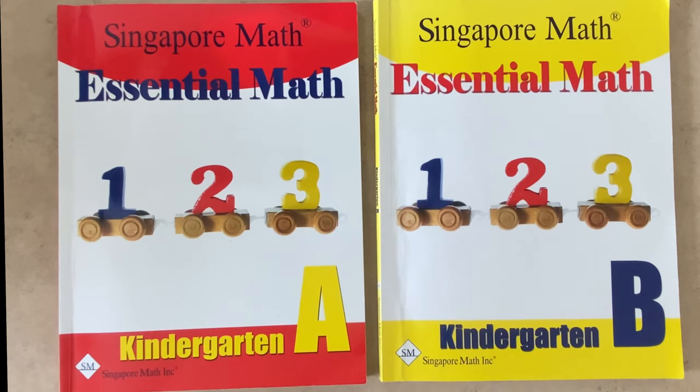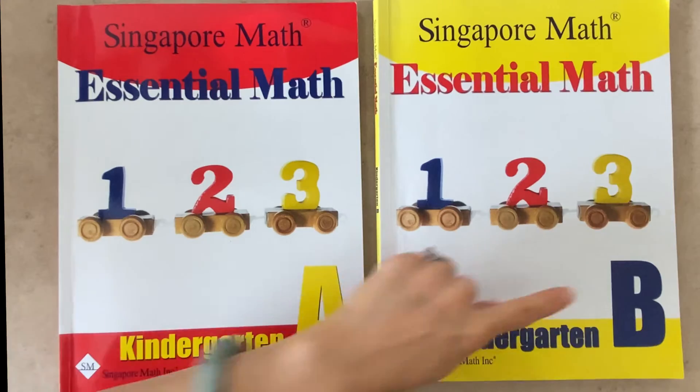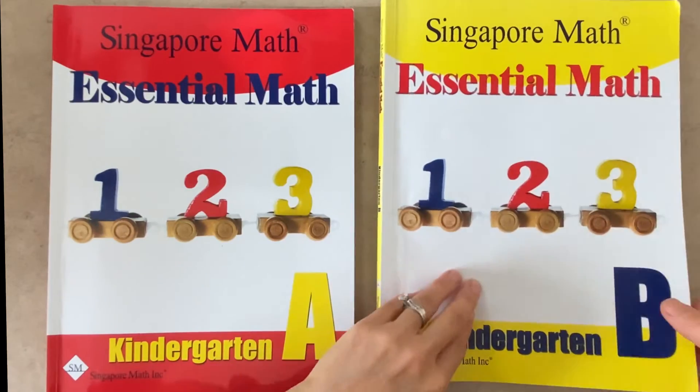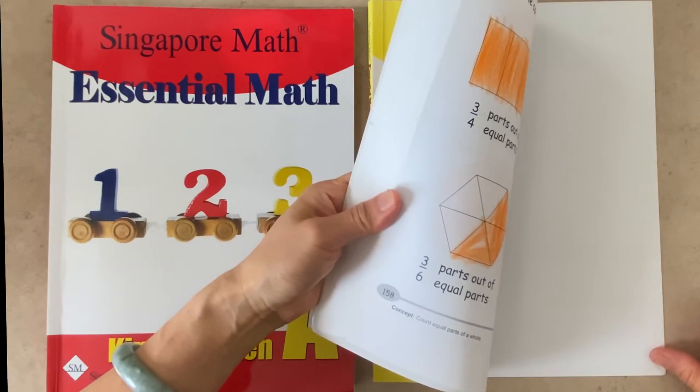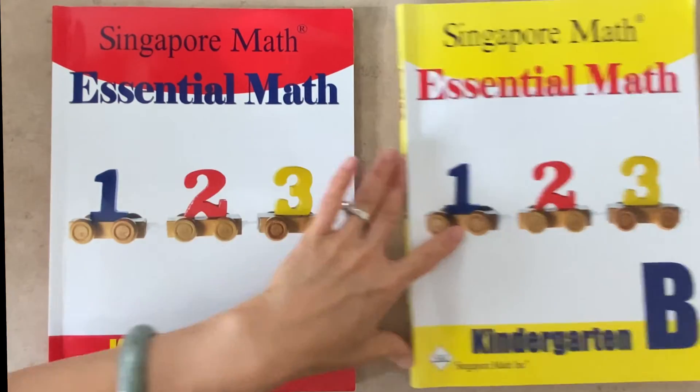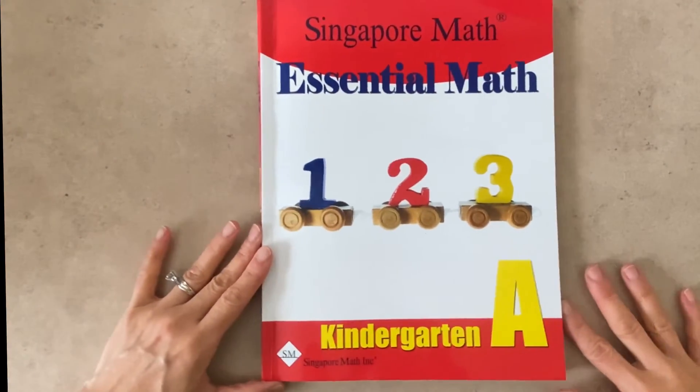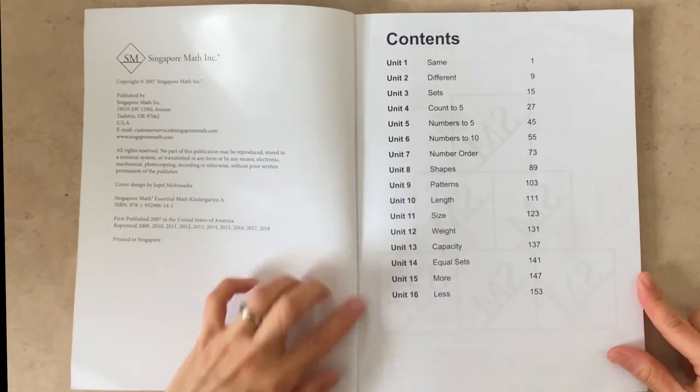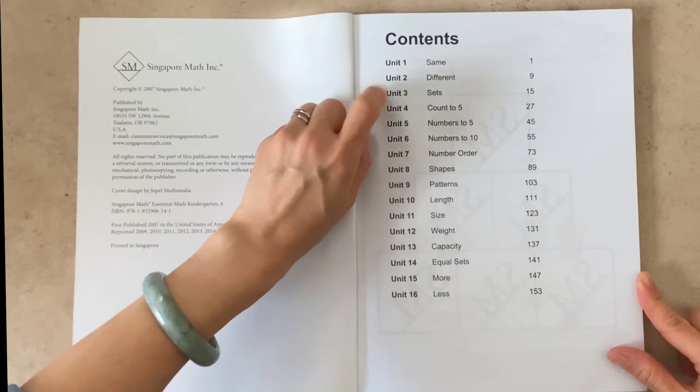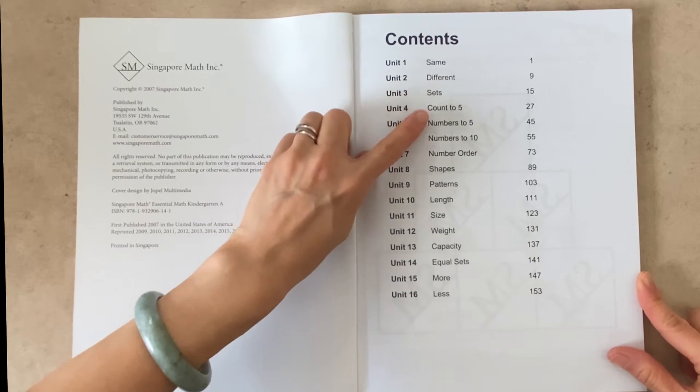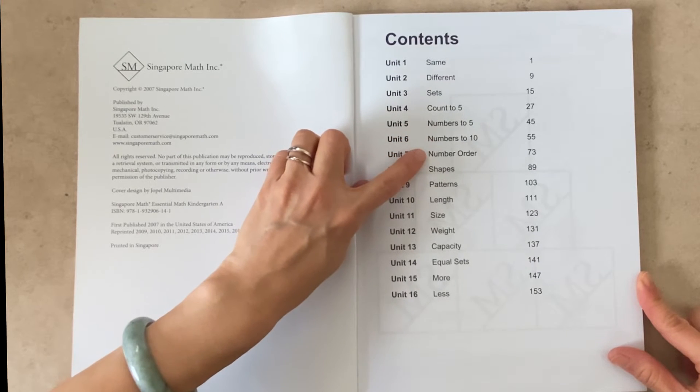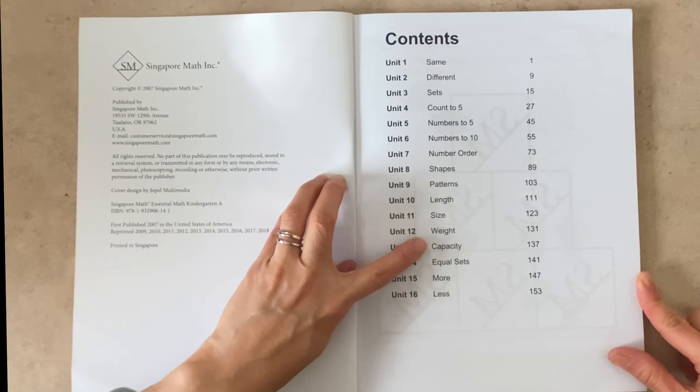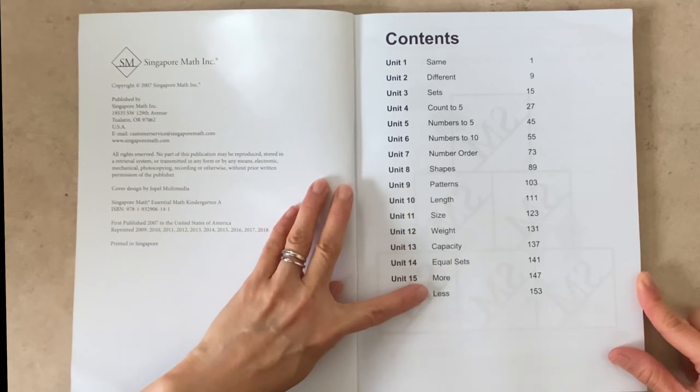The kindergarten level is broken up into two books, A and B. A is 158 pages, and B is also 158 pages. So let's go ahead and look inside level kindergarten A. So here we'll start with the table of contents. It's broken up into 16 units. We're going to be learning about same and then different sets, counting to five, numbers to five, numbers to ten, number order, shapes, patterns, length, size, weight, capacity, equal sets, more, and less.